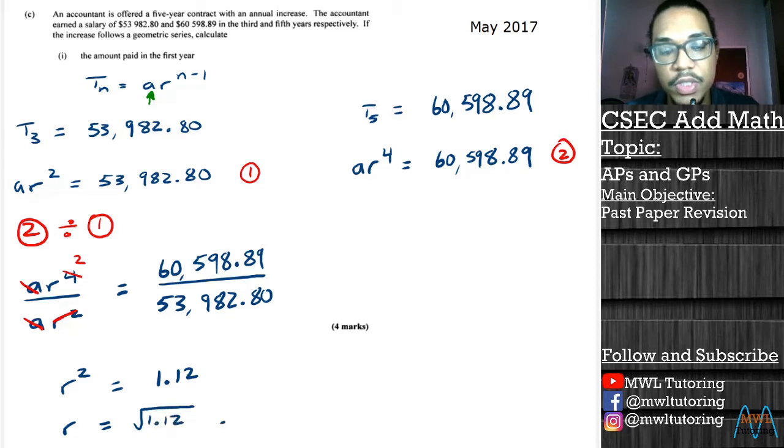Yep, there we go, 1.12 for r^2. Now we want r which is the square root of 1.12. So square root of answer and we get plus or minus 1.06. But we have to be very logical about which value of r we're going to choose. There's a positive value 1.06 and there's a negative 1.06.